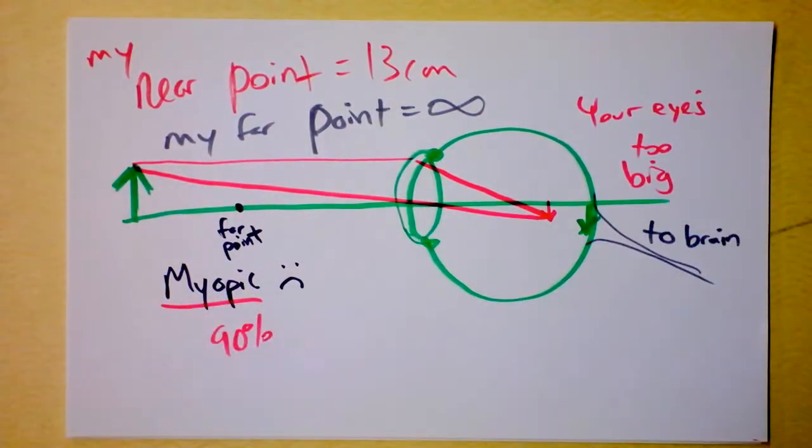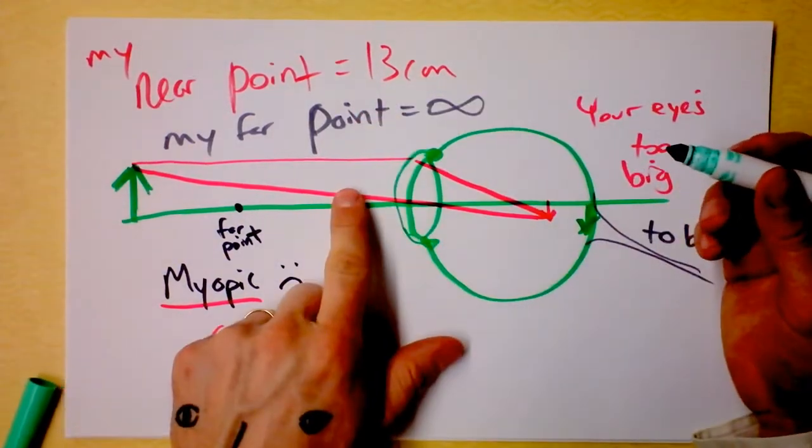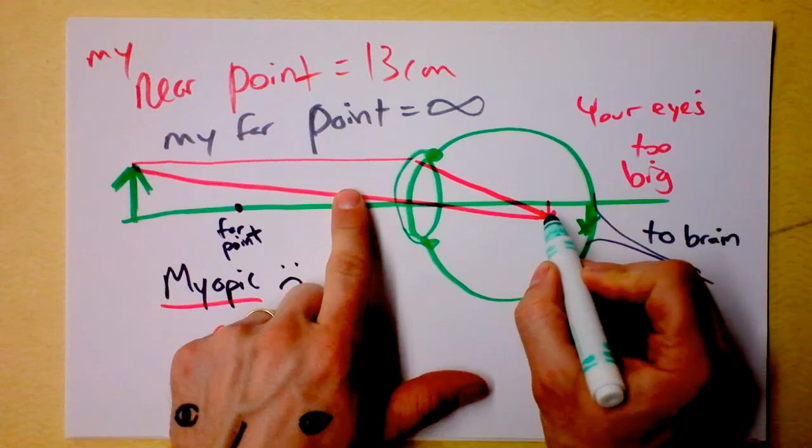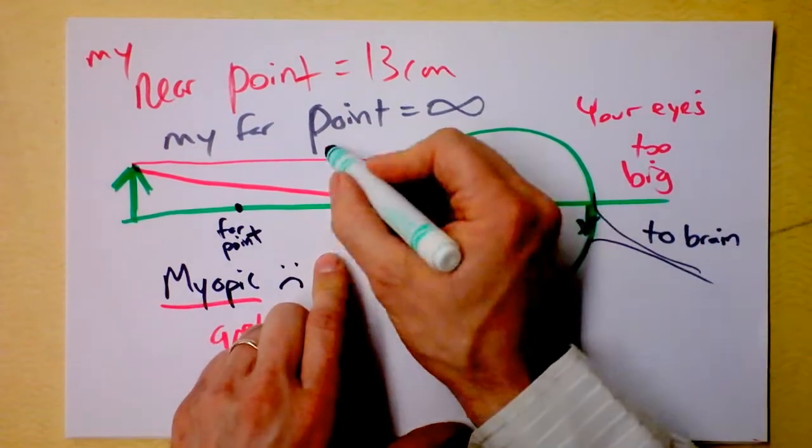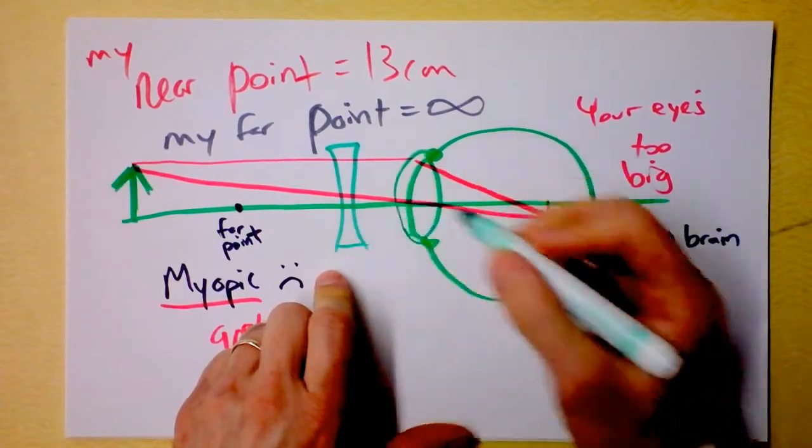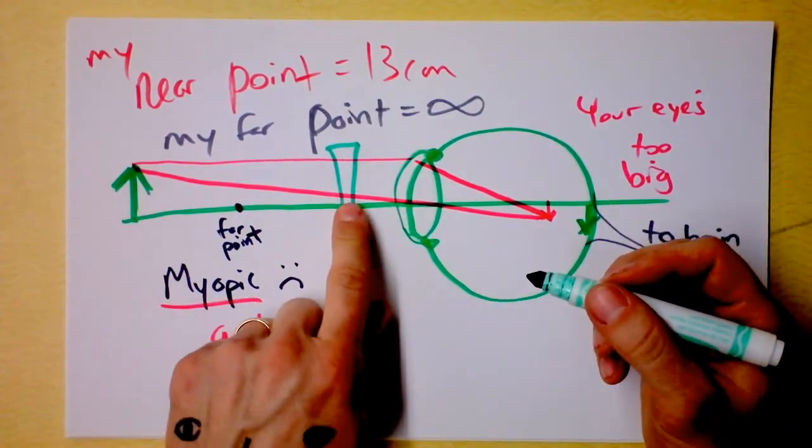So what you need to do instead is you need to get up in here with a seafoam green. What kind of lens do I want? Do I want this to converge closer or further away? I want it to converge further away, so I need a diverging lens up in here. Someone who's myopic has a diverging lens.